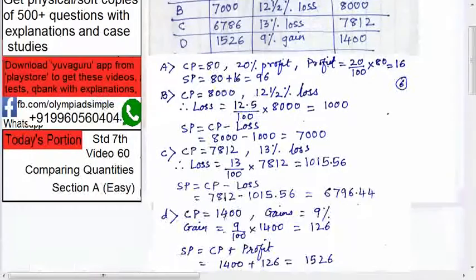Next, in exam, once you find out the correct answer, you need not go for D. I am just giving you for your reference now. Cost price is 1400, then 9 percent gains.